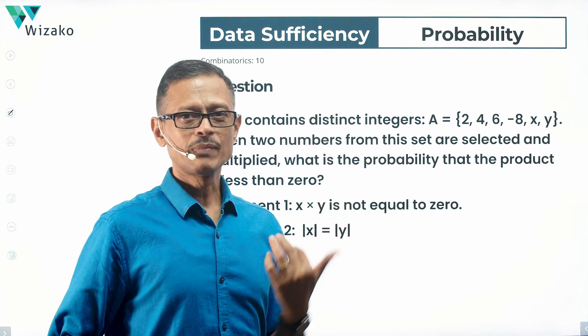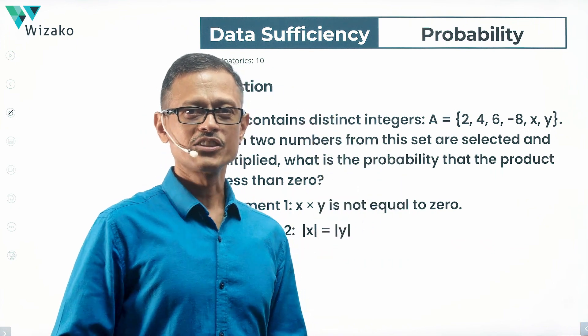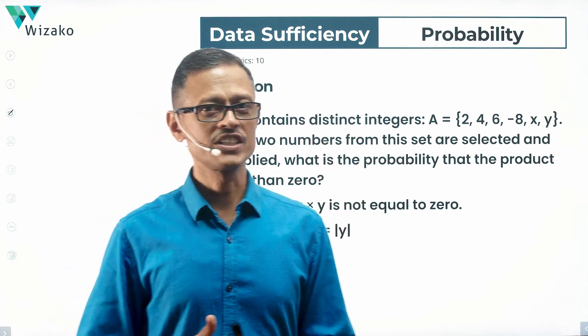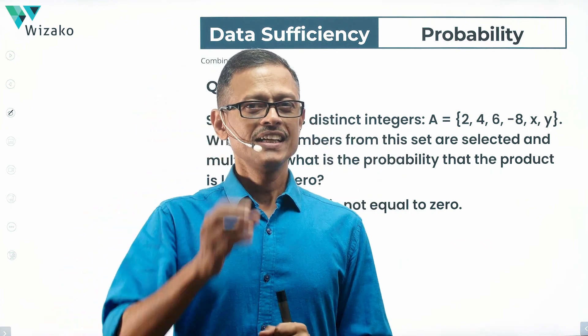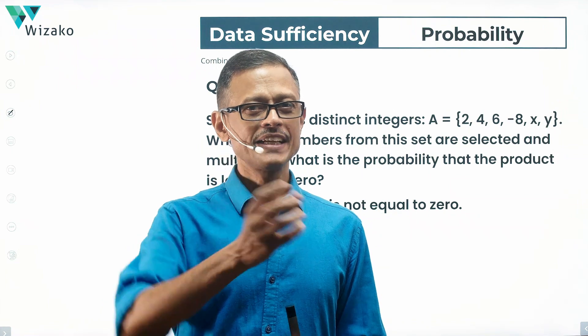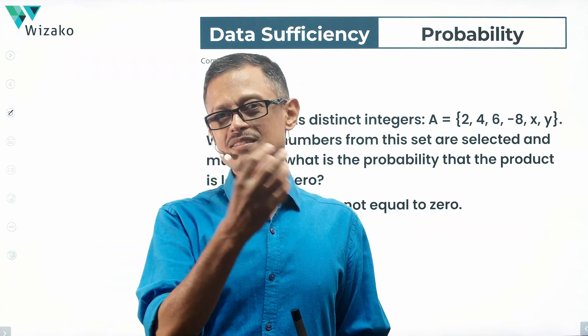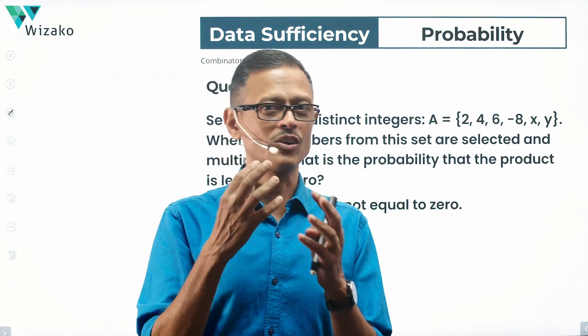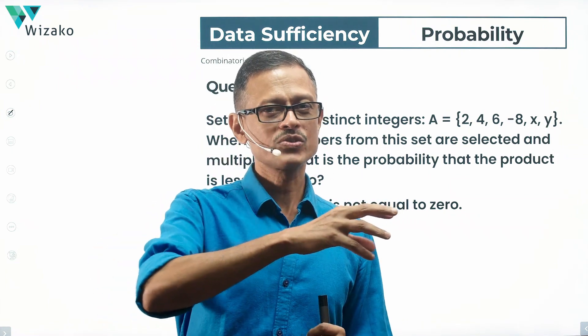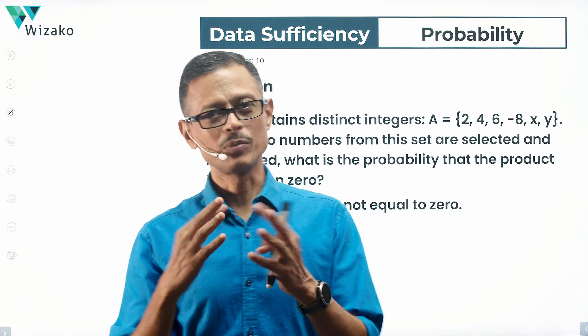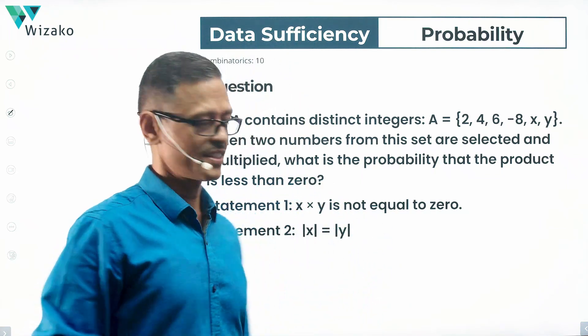Hi, this is a hard math question. It's a GMAT data sufficiency question in probability. In addition to probability, it also tests some basic concepts involving absolute values and number properties. Let's take a look at the question.